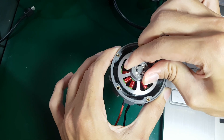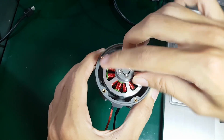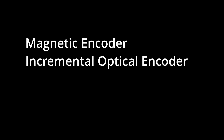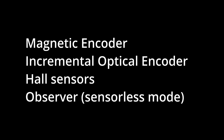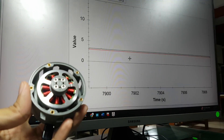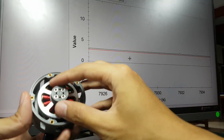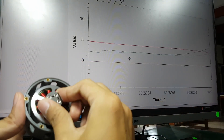This angle feedback can be obtained from various types of sensors, such as magnetic encoders, incremental encoders, hall sensors, or observers if using a sensorless mode with more advanced methods. In the next episode, we will discuss how to read the angle using a magnetic encoder. Thank you for your attention and see you in the next episode.